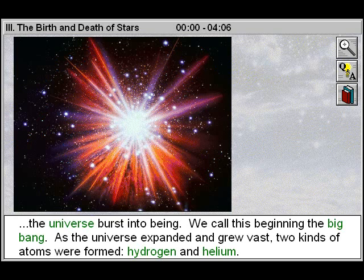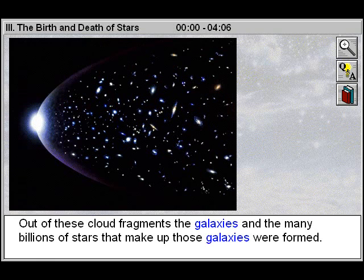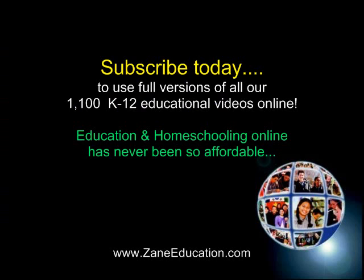As the universe expanded and grew vast, two kinds of atoms were formed: hydrogen and helium. These are the simplest atoms. There were enormous clouds of these gases. These broke up into larger and smaller fragments. Out of these cloud fragments, the galaxies and the many billions of stars that make up those galaxies were formed.